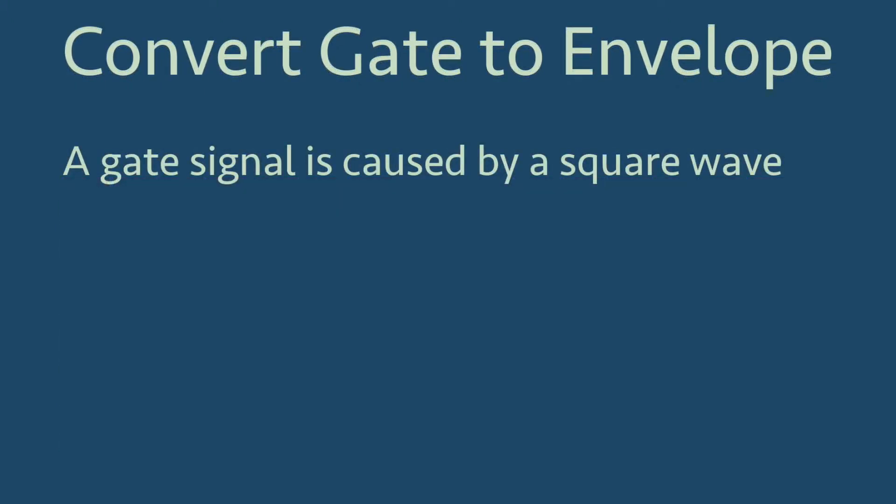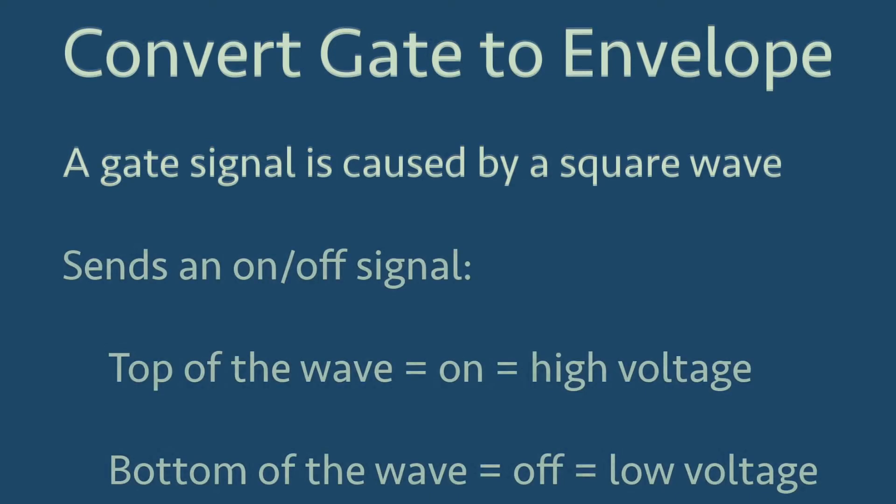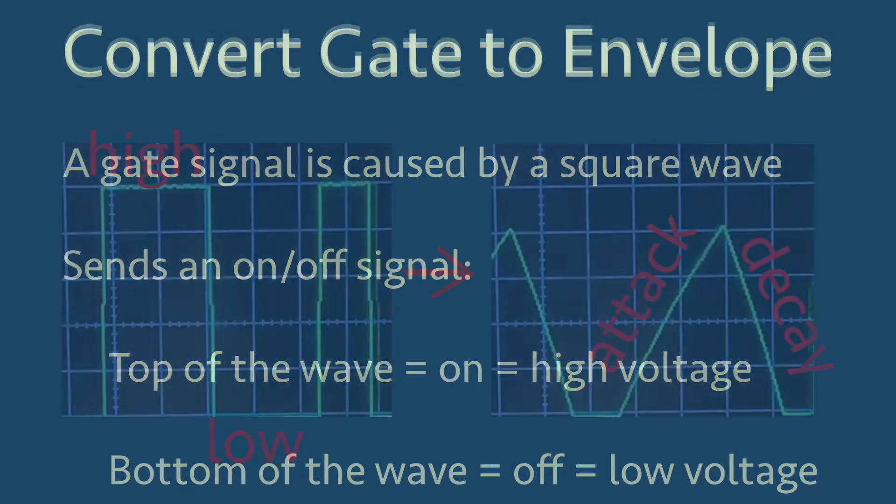A gate signal is caused by a square wave function with a low frequency. We used these gate signals to trigger a drum machine in the video on oscillators. A gate signal simply sends an on-off signal. We can think of the top of the square wave as on and the bottom of the square wave as off. The high voltage is at the top and low voltage is at the bottom.